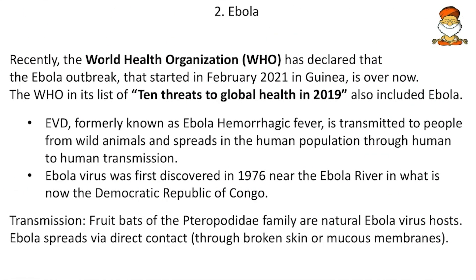Now Ebola. The WHO recently declared that the Ebola outbreak that started in February 2021 in Guinea is over. The WHO also included Ebola in its list of 10 threats to global health in 2019. Ebola virus disease is caused by the Ebola virus, formerly known as Ebola hemorrhagic fever. It is transmitted to people from wild animals and spreads through human-to-human transmission.